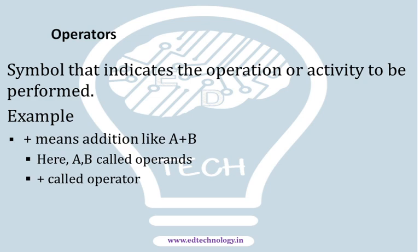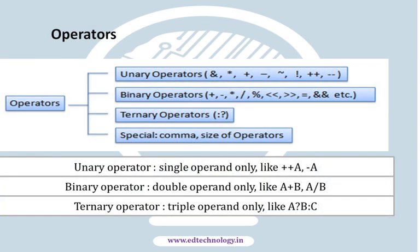Based on the type of operands required, the first classification of operators is of three types: the first is unary operators, the second is binary operators, and the third is ternary operators. Based on that, you need a certain number of operands in the operation. There is also one more category, which is special operators. This will be a series of videos, so we'll be breaking it up into different parts so you can understand operators in detail.